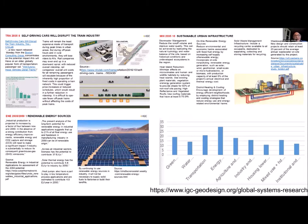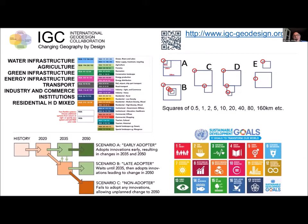We researched innovations that could be expected by 2050 and found about 150 of them — all available on the internet as PowerPoint slides with citations. In the collaboration, we agreed to study as many systems as possible: water, agriculture, green infrastructure, energy, transport, industry, commerce, institutions, housing, and two of local choice. We would study at specific scales, in specific color codes, with specific time frames, and with scenarios dealing with innovation or non-innovation. We would use the UN sustainability goals to assess the schemes, either by model or by judgment.